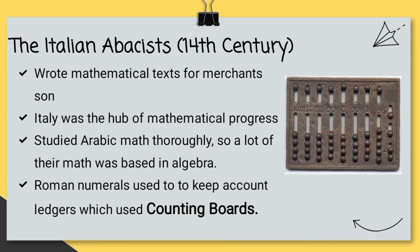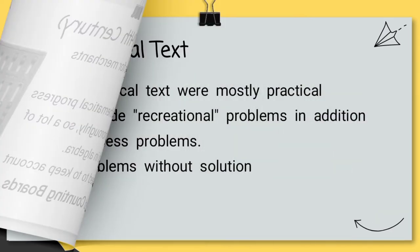Italian Abbacists were a class of mathematicians who wrote texts that they thought the math needed for the sons of merchants. Italy was the start and the hub of this. They actually studied Arabic math thoroughly, so a lot of math was based in algebra. This is actually a counting board in the picture you can see. The Roman numerals were used with the counting sliding pieces there, and those were used to keep account ledgers.